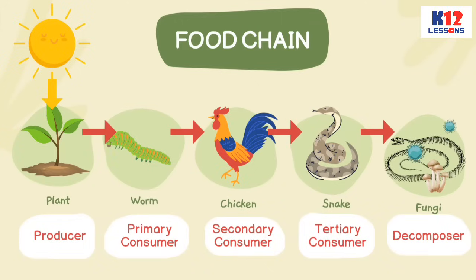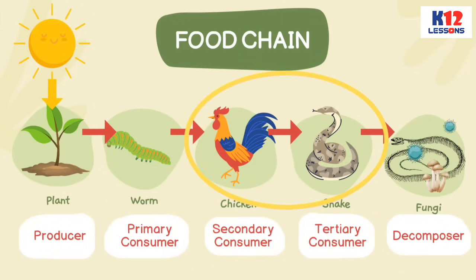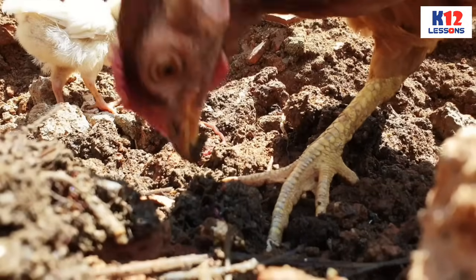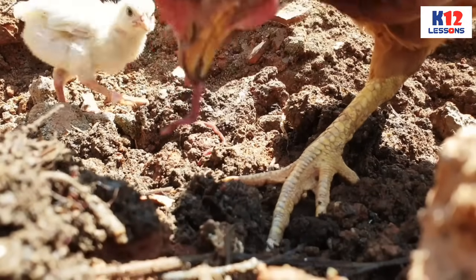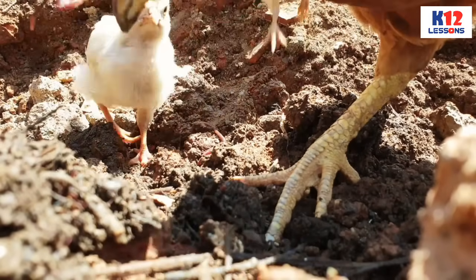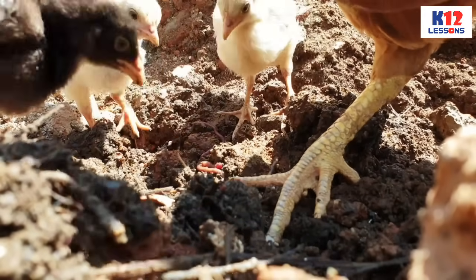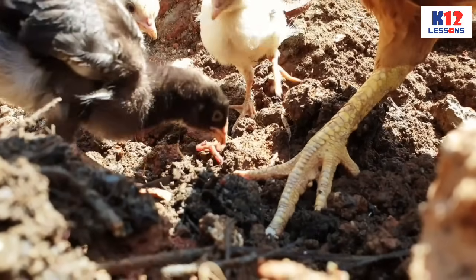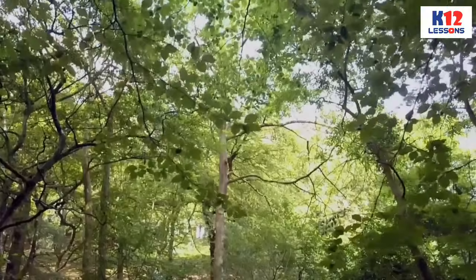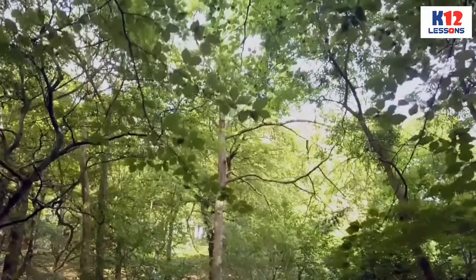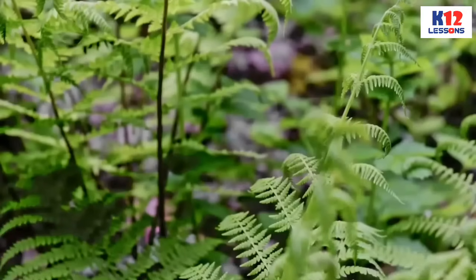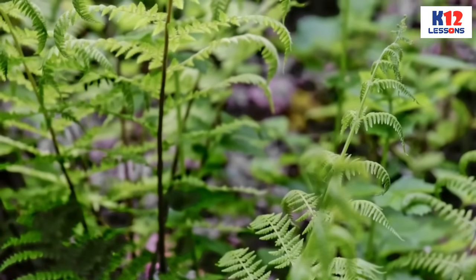Producers provide food for the consumers, which include herbivores — plant-eating animals — and carnivores — flesh-eating animals. Herbivores provide food to the carnivores. Producers include trees, shrubs, and other plant life in the forest.